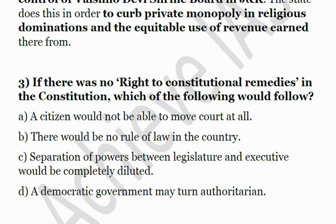The third question: if there was no constitutional right to constitutional remedies in the Constitution, which of the following would follow? A) A citizen would not be able to move court at all. B) There would be no rule of law in the country. C) Separation of powers between legislature and executive would be completely diluted. D) A democratic government may turn authoritarian.